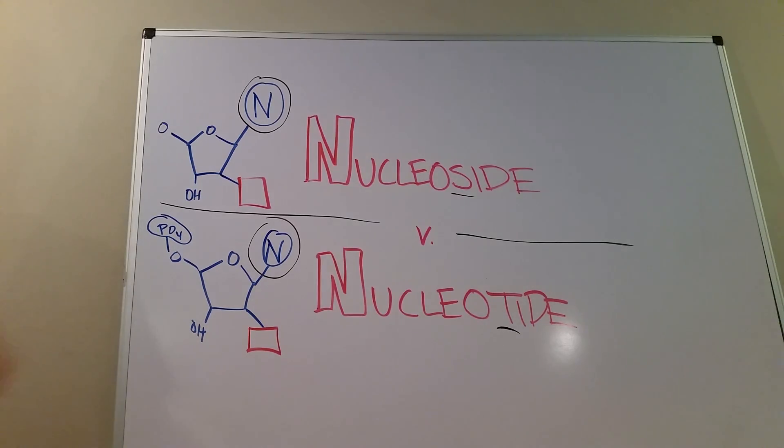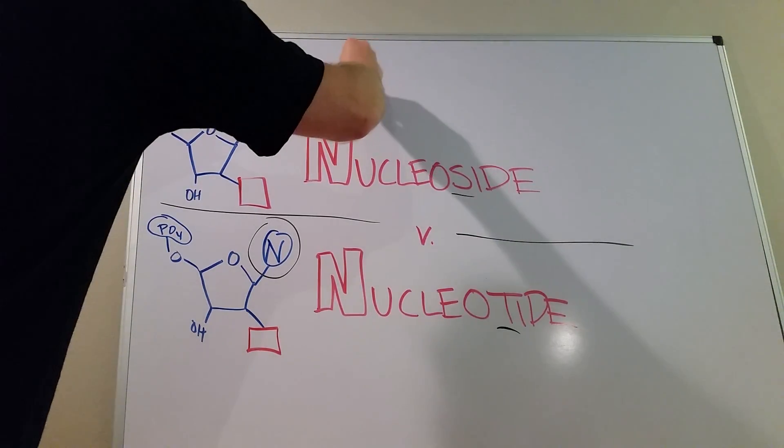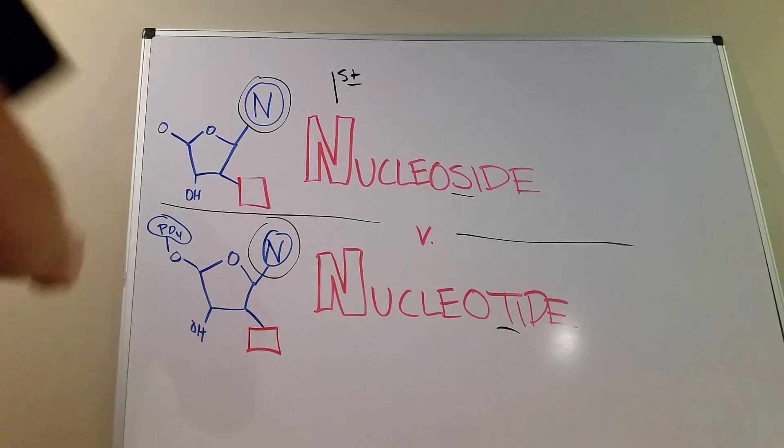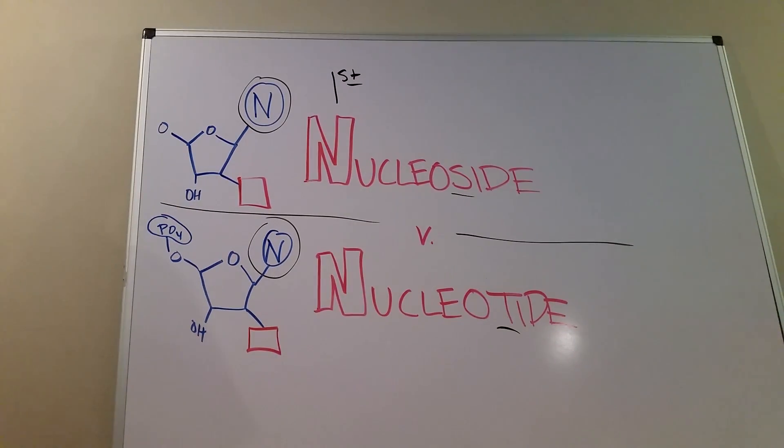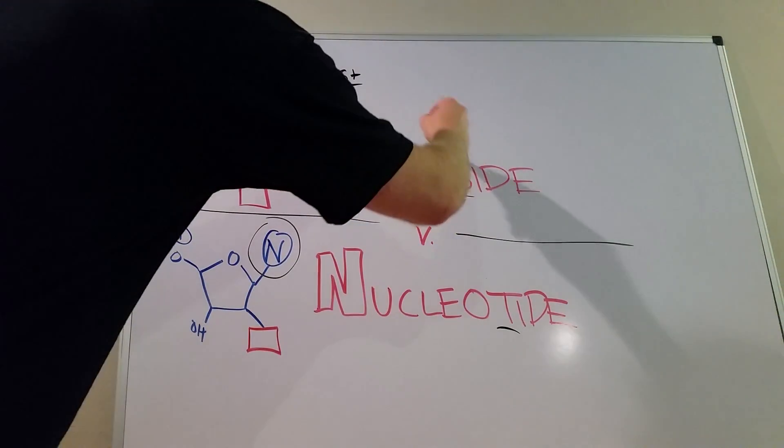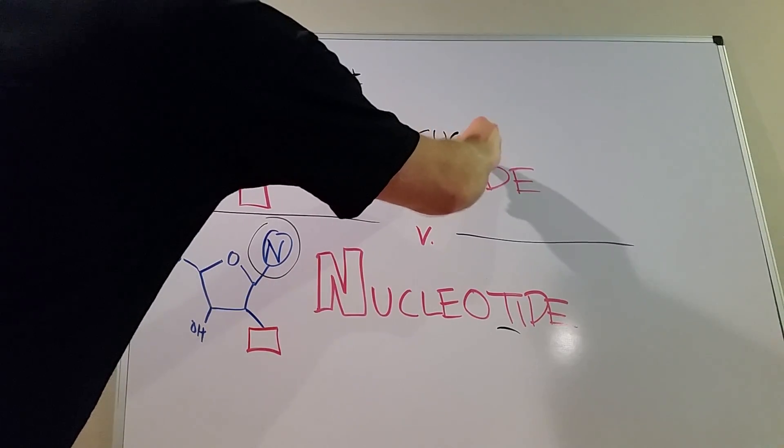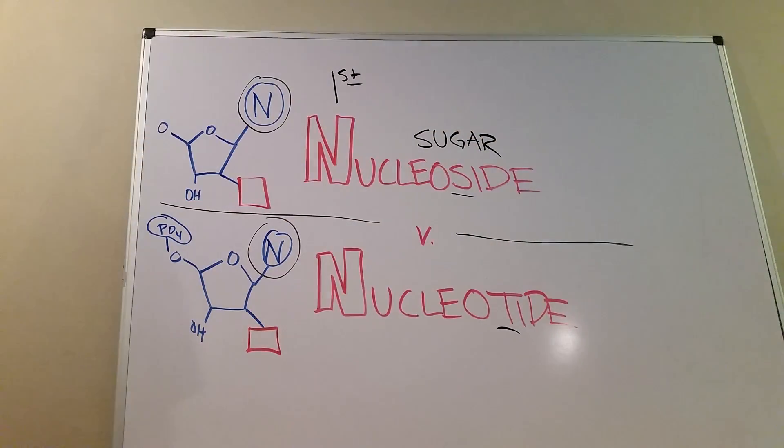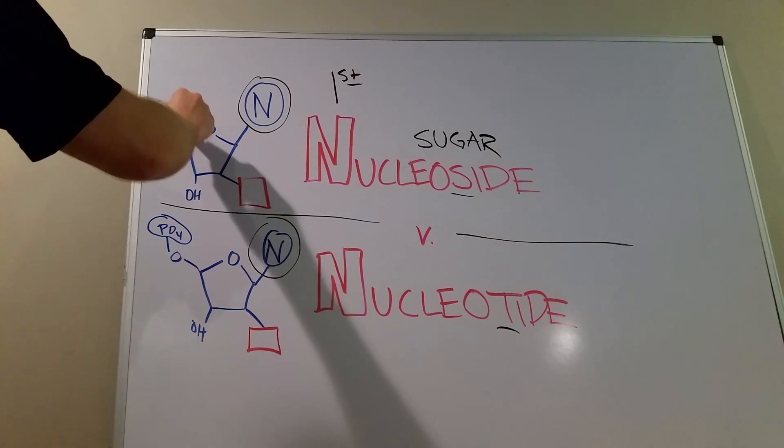And the first step that we take is the step that leads us to nucleosides. Now sides, S, when you see S, think of sugar. Sugar seems kind of like a random thing, but the reason why is because of this guy right here.